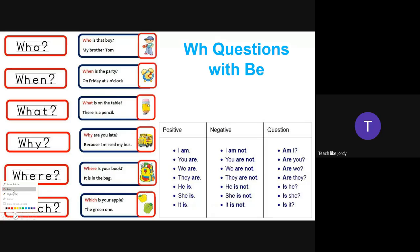Let's see the WH question words. We have 'who' — asking about a person (siapa). 'When' — asking about time (kapan). 'What' — asking about a thing (apa). 'Why' — asking about a reason (kenapa). 'Where' — asking about a place (dimana). And 'which' — asking about an option (yang mana).